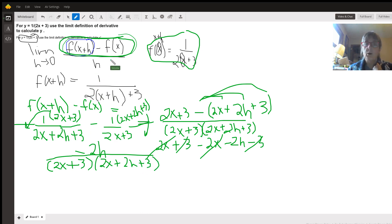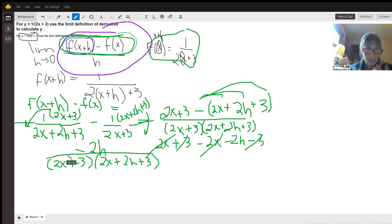Now, the last part of this is we have to divide by h. And dividing by h is the same thing as multiplying by 1 over h. So if I just multiply this by 1 over h, my h's cancel.